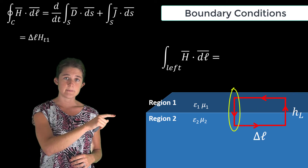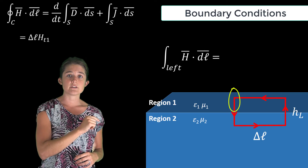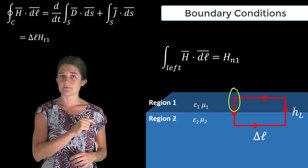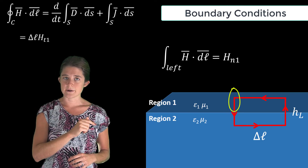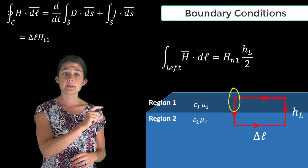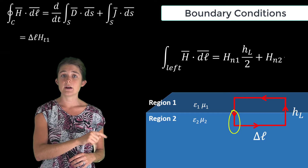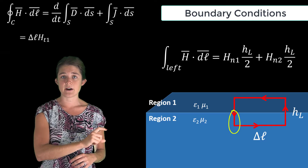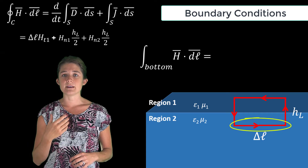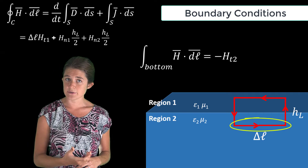Now we'll go down the left side of the loop. For the upper half of this edge, the integral of H dot dl is the normal part of the magnetic field in region one, H_n1, times half the length of the edge, plus the normal part of the magnetic field in region two times the other half of the edge. Then across the bottom edge of the loop we have negative the tangential part of the magnetic field in region two.